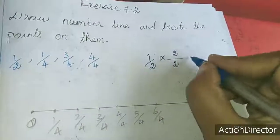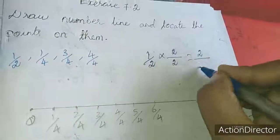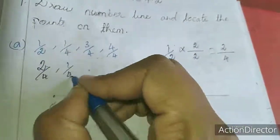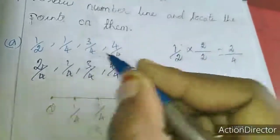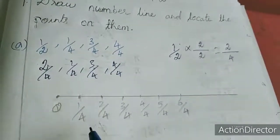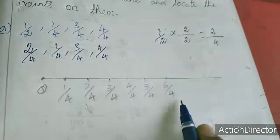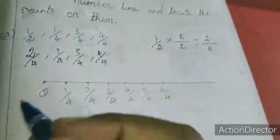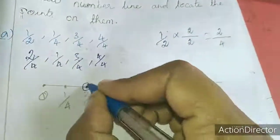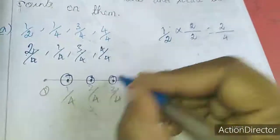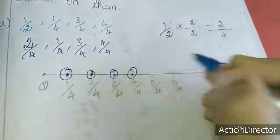For denominator 4, divide each unit into 4 equal parts. Mark 1 by 4, 2 by 4, 3 by 4, 4 by 4, 5 by 4 on the number line. So if 2 by 4 is here, mark the next one — 3 by 4 is here, 4 by 4 — mark the dot. The dot is a circle.